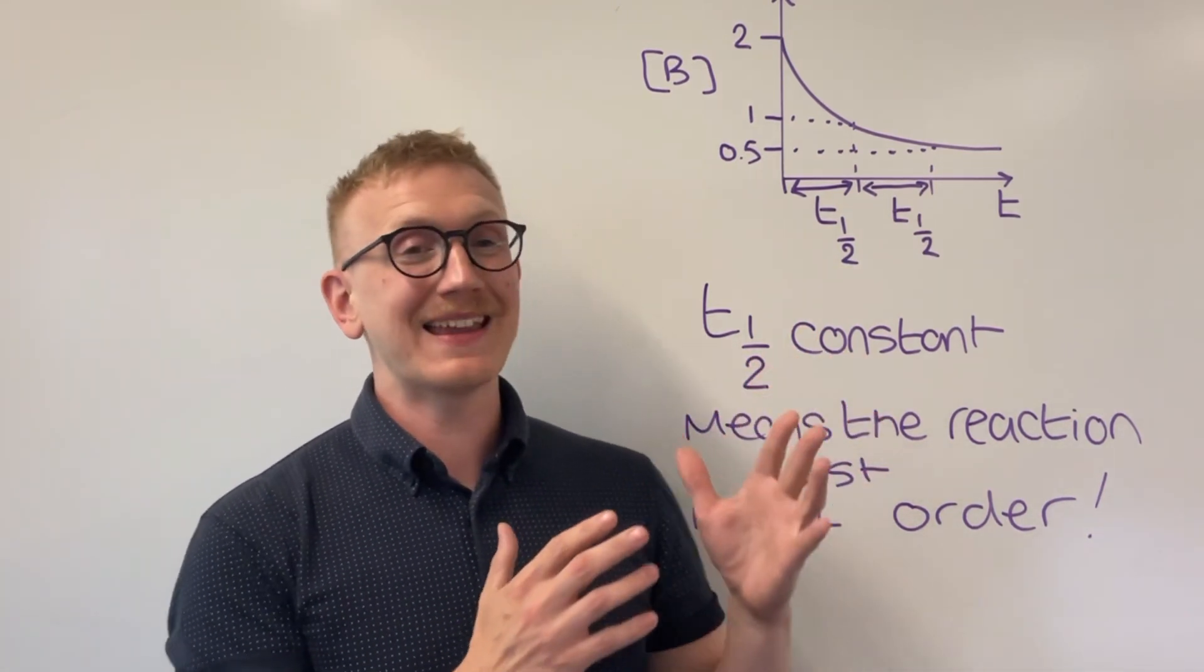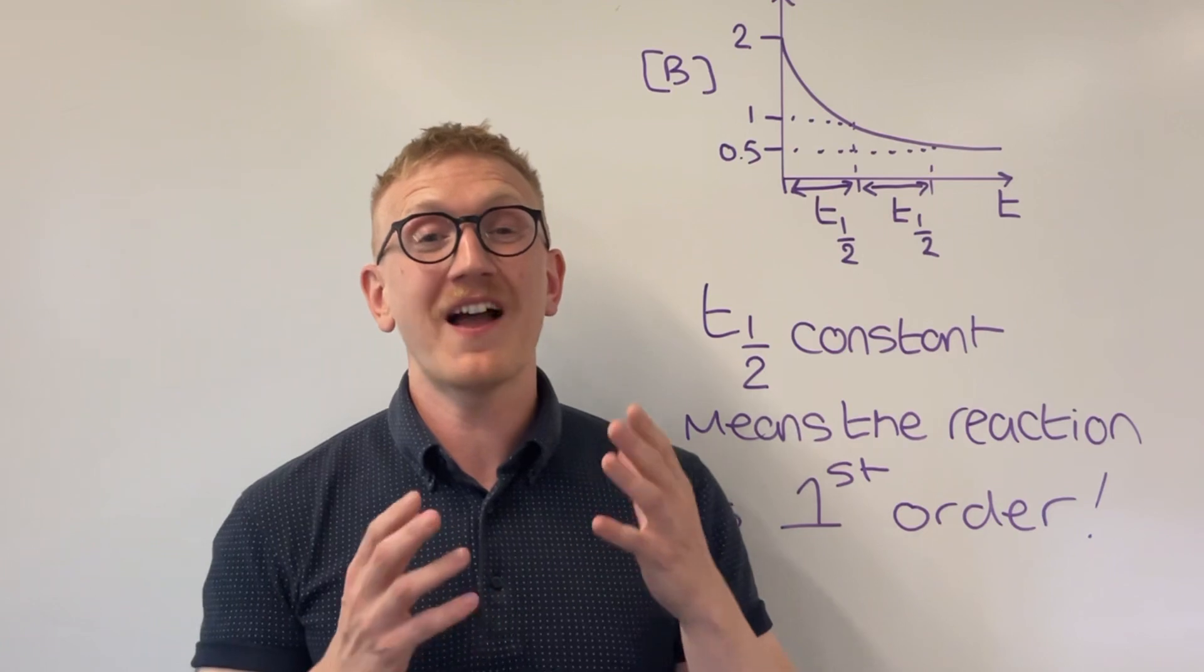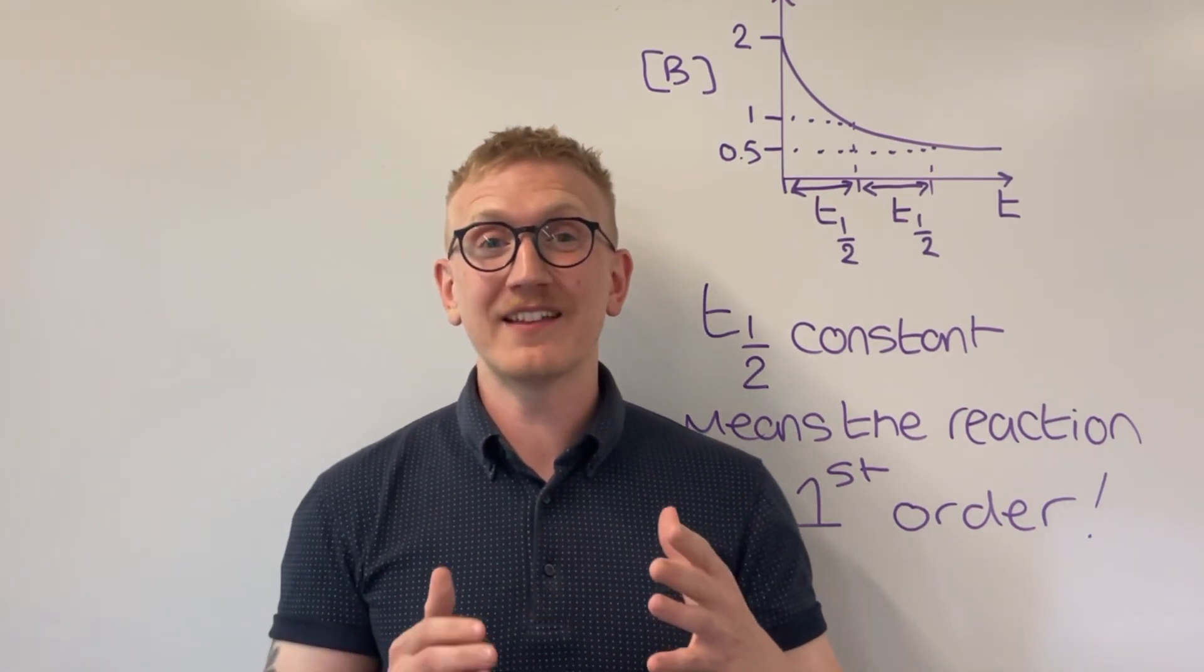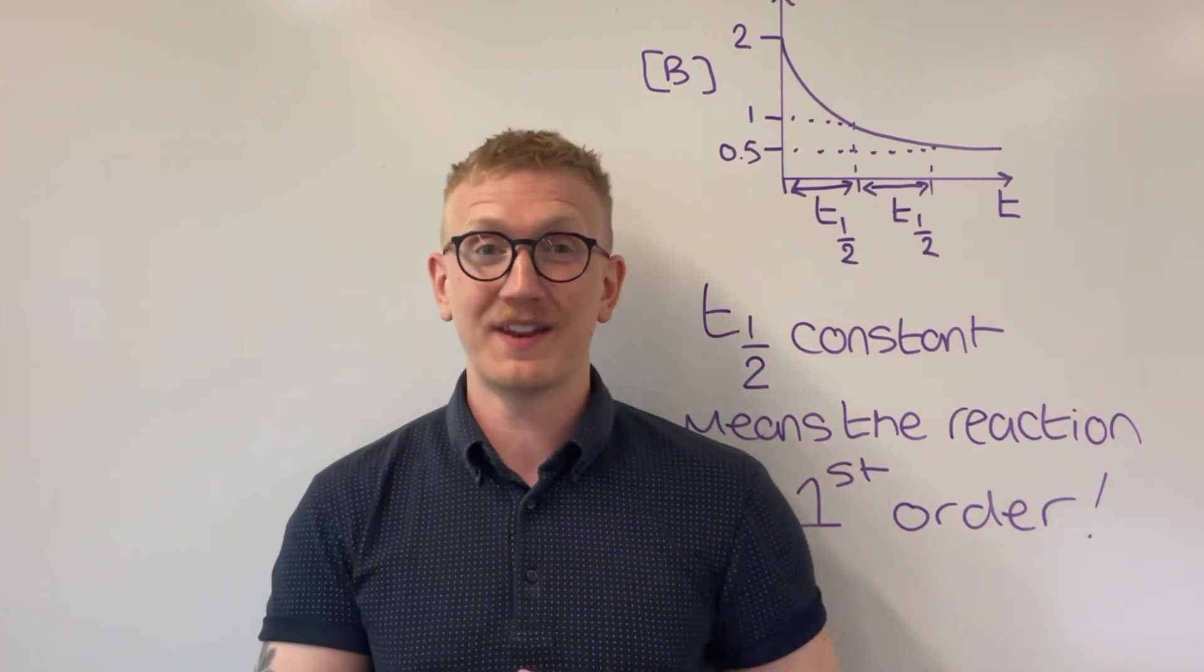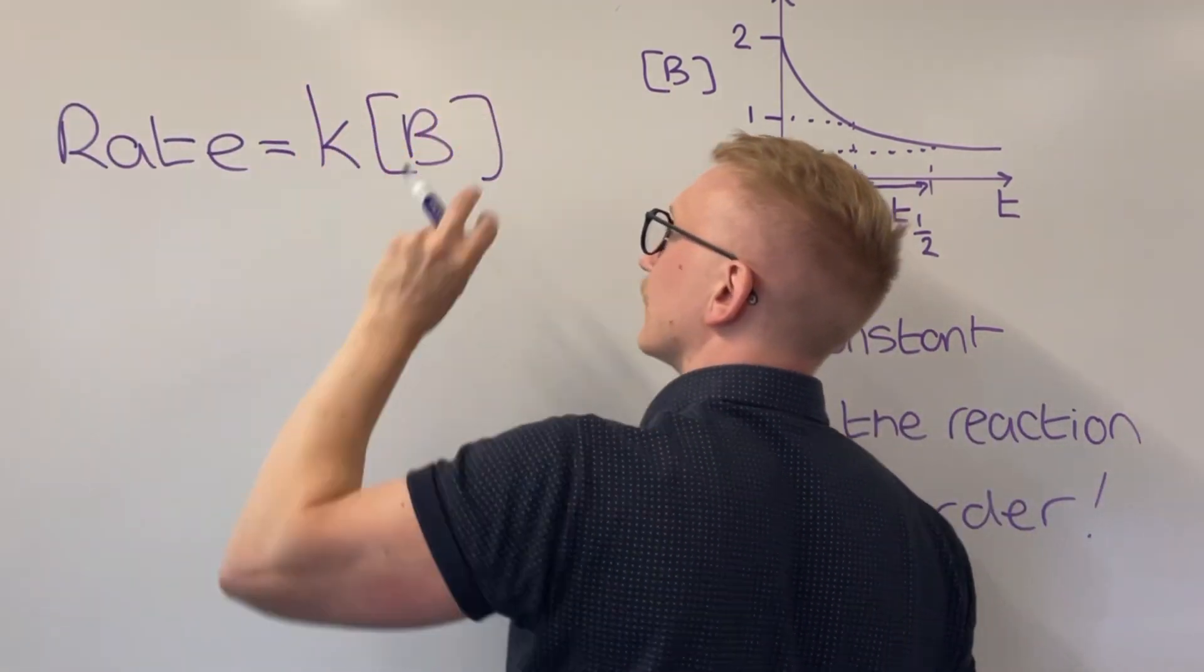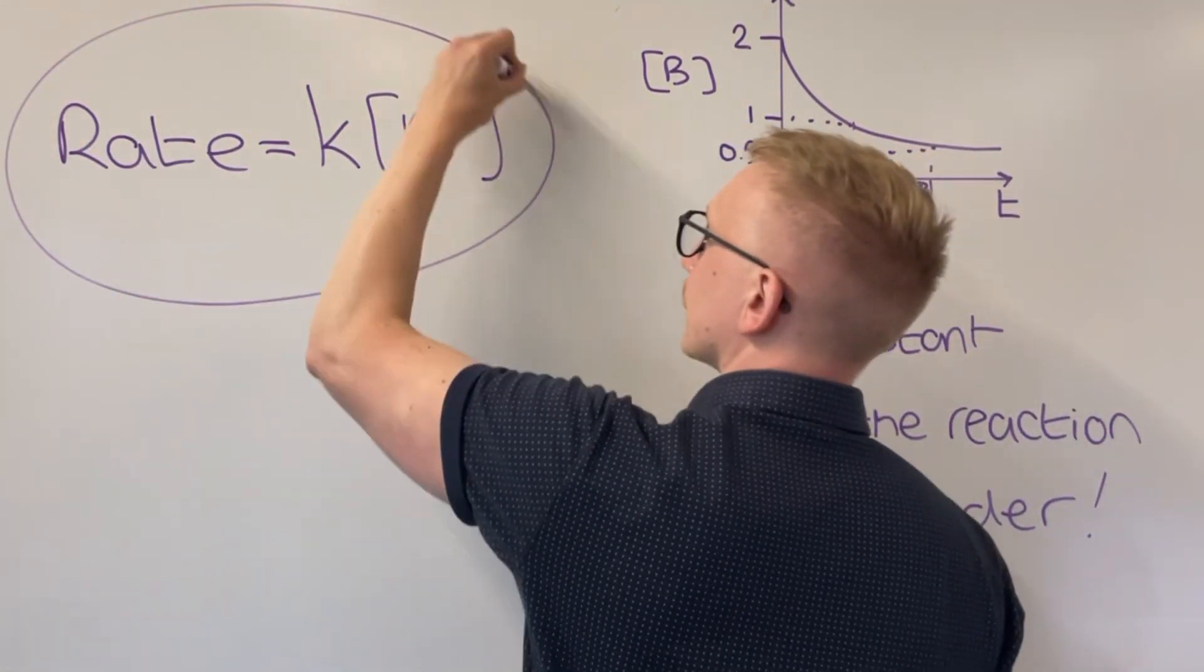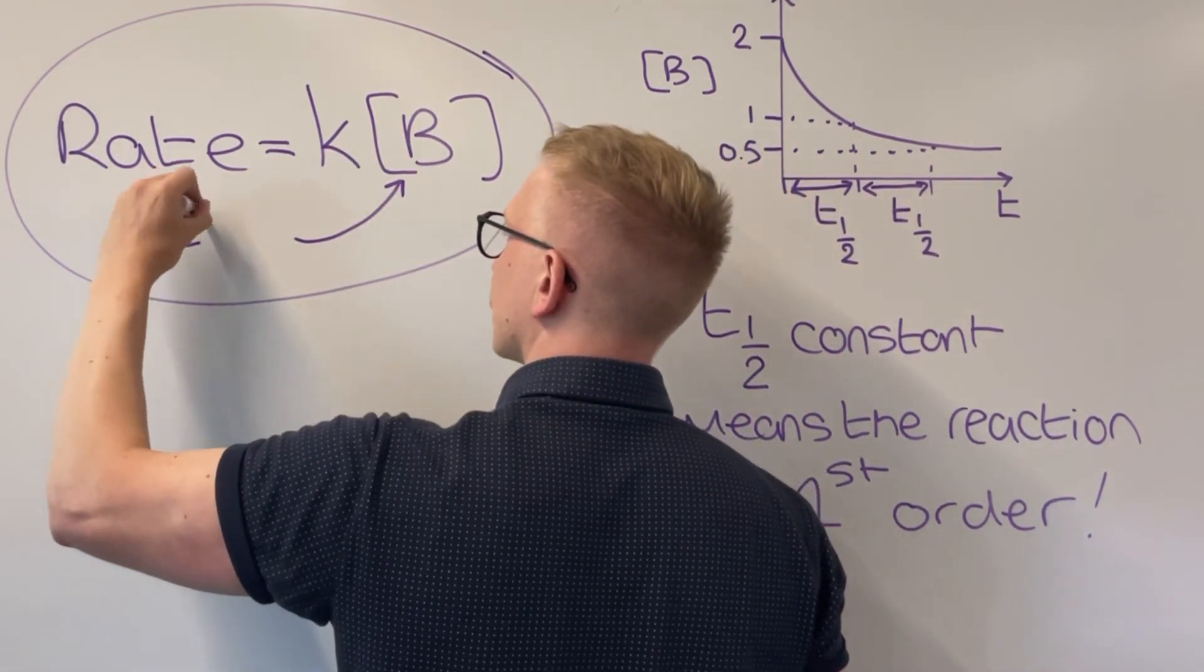The conclusion we're able to make here that's most important is if I can prove that the time taken to go from 2 to 1 mole per decimeter cubed and then 1 to 0.5 mole per decimeter cubed is the same, I can say that reactant is first order and the reaction is first order as well.